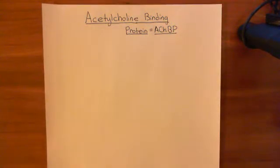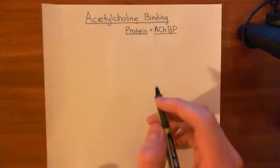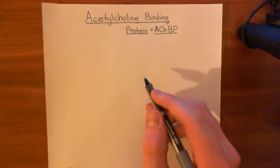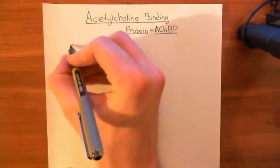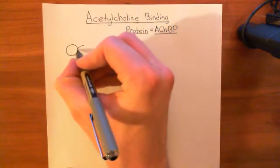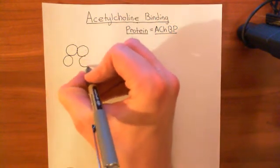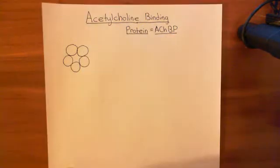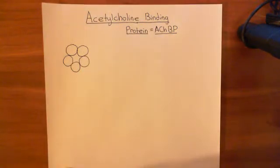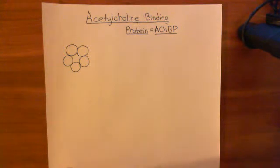Let me start off with the structure of this acetylcholine binding protein, and then we'll discuss its function, because its function is quite cool. Basically, it is a pentamer - five proteins stuck together. Here are these five proteins stuck together in a pentameric ring, and you'll notice that this is very much like the nicotinic acetylcholine receptor, where we have five cis-loop ligand-gated ion channel protein subunits stuck together to make the full nicotinic acetylcholine receptor.